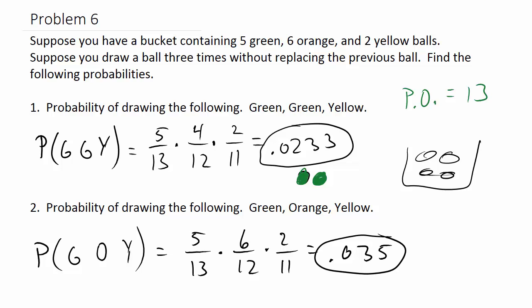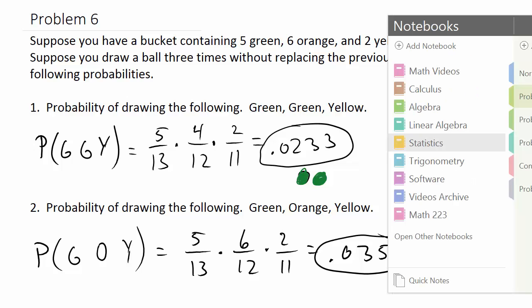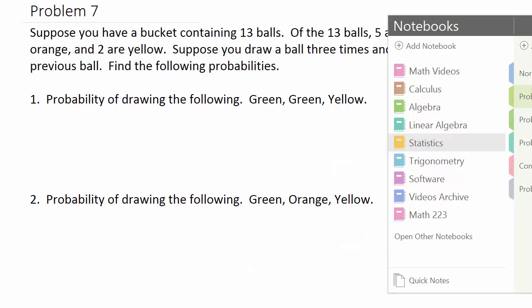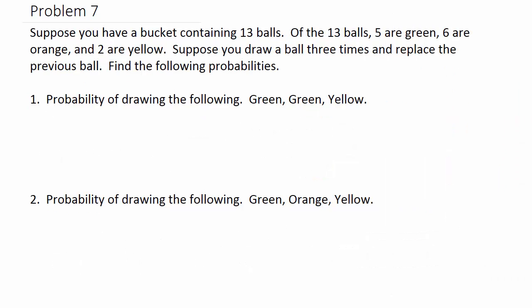So multiplying those together gives approximately 0.0256 when rounded to four decimal places. (The fourth decimal was a nine and rounded up.)